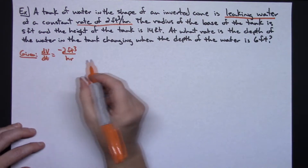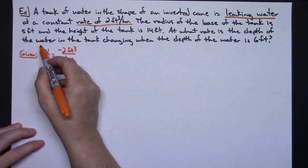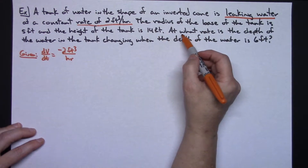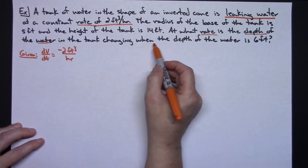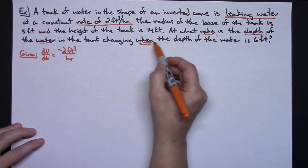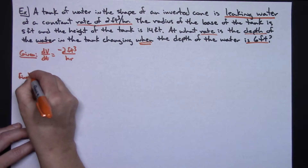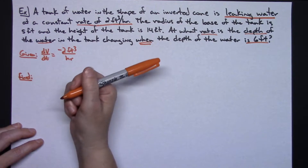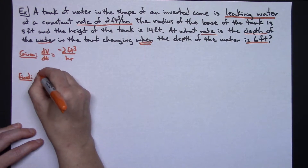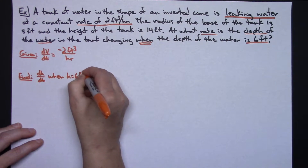The problem is asking at what rate is the depth — or height — of the water changing. The 'when' part is important: the depth of the water is at 6 feet. So my find is dh/dt, the change in the depth of the water, when h equals 6 feet.